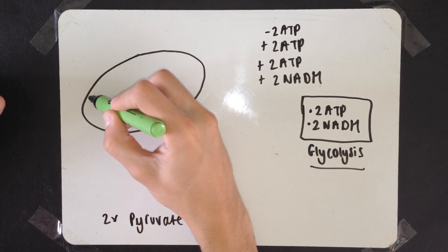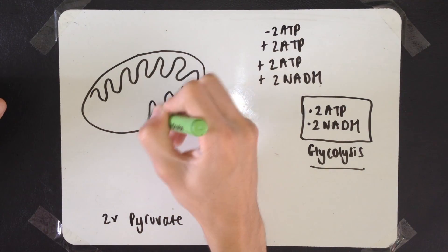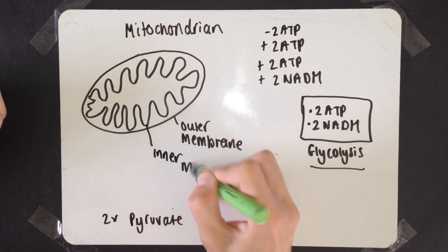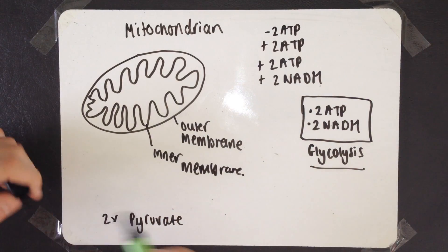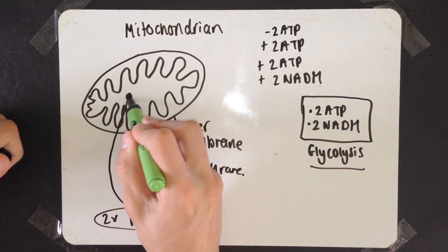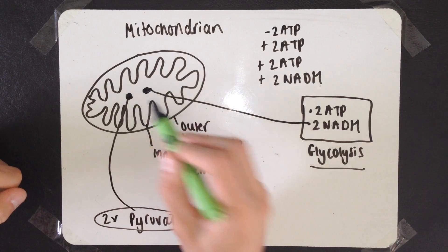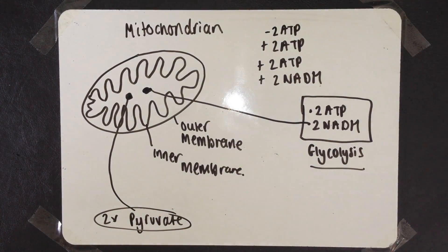I'm going to draw a rough structure of a mitochondrion to show where it all goes. Here, we have the outer membrane, and then we have the inner membrane. In the middle, we have the matrix. The two reduced NADH molecules and the two pyruvate molecules travel to the matrix. Here, the link reaction and Krebs cycle takes place.